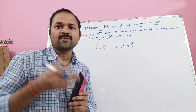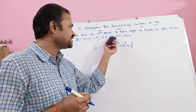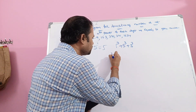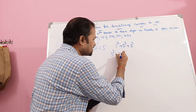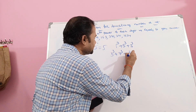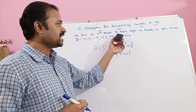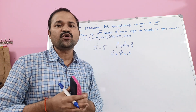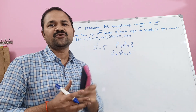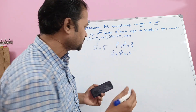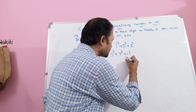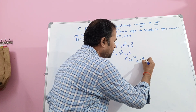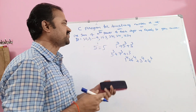Likewise, 370 is an Armstrong number. Here 370 has 3 digits, so we raise each digit to the power 3: 3 cube plus 7 cube plus 0 cube equals 370. Similarly, 371 is also an Armstrong number. 1634 is also an Armstrong number — it has 4 digits, so 1 power 4 plus 6 power 4 plus 3 power 4 plus 4 power 4 equals 1634.